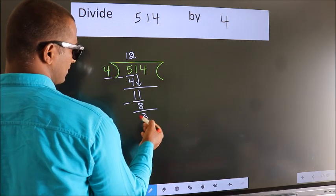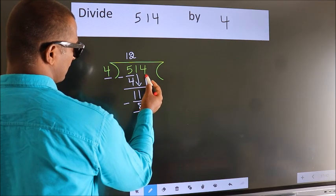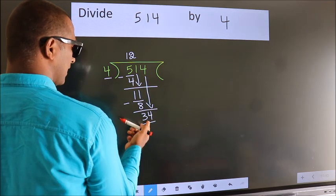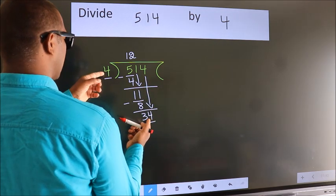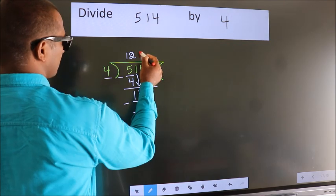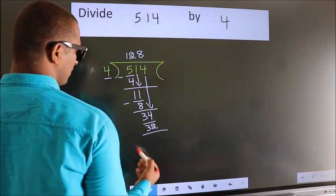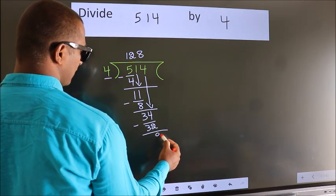After this, bring down the beside number. So, 4 down. So, 34. A number close to 34 in 4 table is 4 8 32. Now we subtract. We get 2.